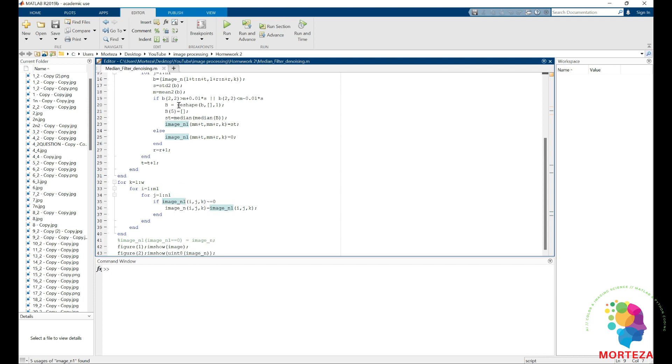If they're not zero, that means they are the denoised version. So I would put those values into image N. So I would replace the original values in the original image with the image N1 values that are not zero.